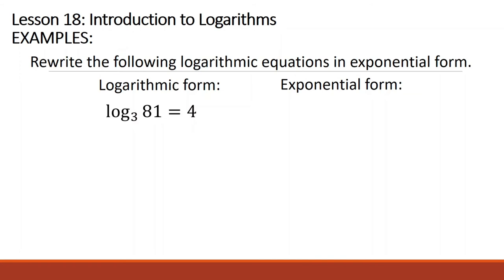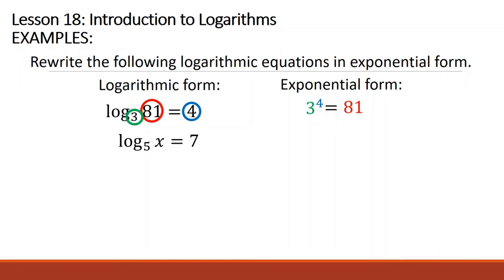Now let us rewrite the following logarithmic equations in exponential form — the reverse direction. Example: logarithm of 81 base 3 is equal to 4. The tip is: b is always the base, c becomes the exponent. So 3 raised to 4 equals the remaining number, which is a, which is 81. Next, logarithm of x base 5 is equal to 7. In exponential form, that is 5 raised to 7 is equal to x.